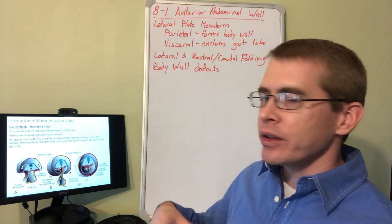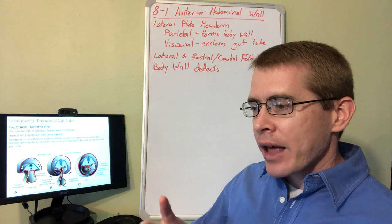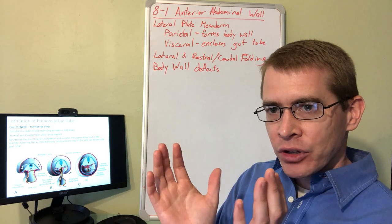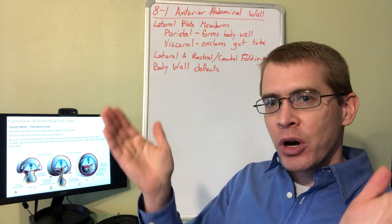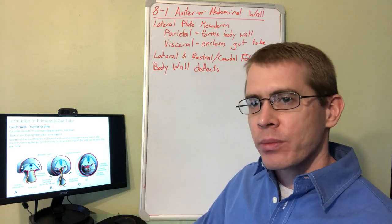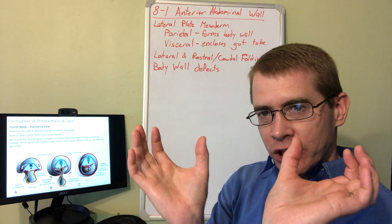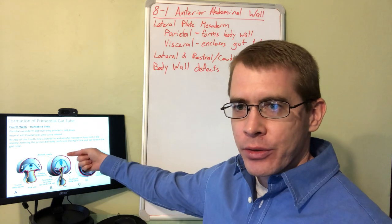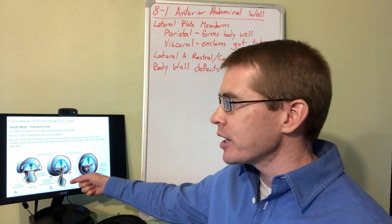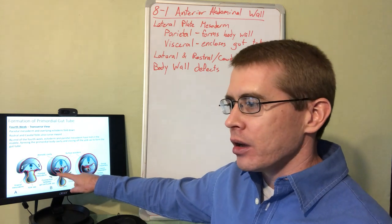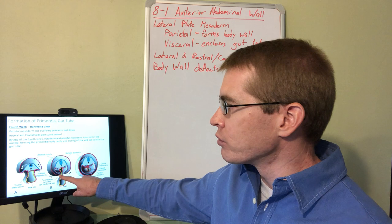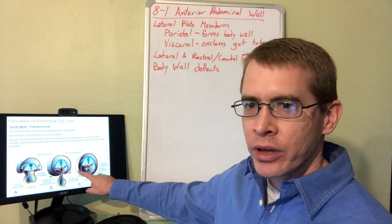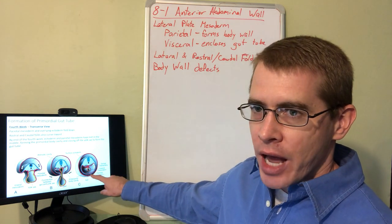In the beginning of the fourth week, these lateral mesodermal structures begin to fold in different ways around the lateral sides of the yolk sac and anteriorly and posteriorly, rostrally and caudally, to form the fetal position of the embryo. You can see here how the parietal mesoderm folds around to the sides and bottom of the embryo, forming that anterior abdominal wall.